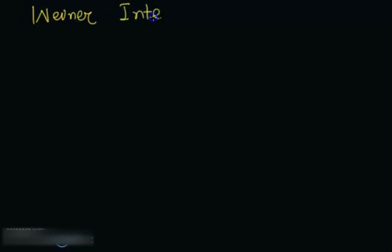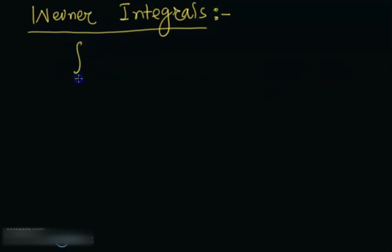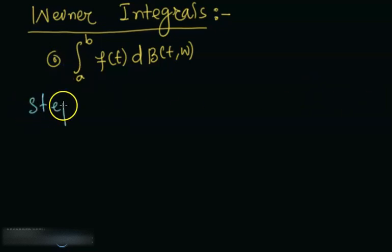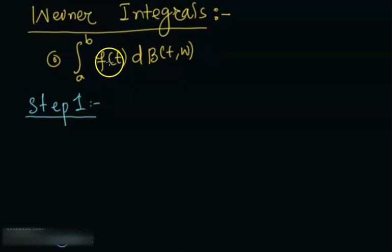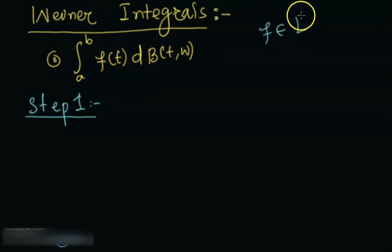So we will define Wiener integrals — in other words, we will define the methodology behind computing the integral of a deterministic function f with respect to dB (Brownian motion). There will be two steps. I will be defining this integral for those functions belonging to the space of square-integrable functions on a closed interval of the real numbers.